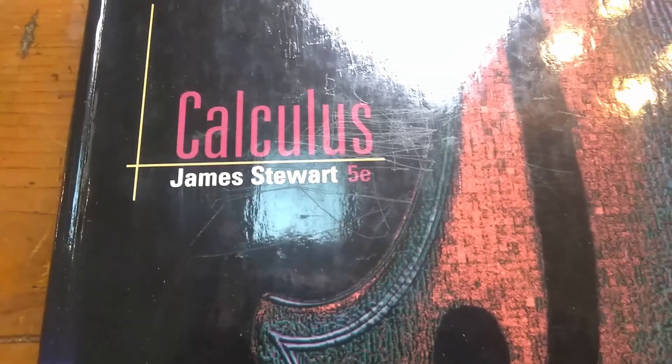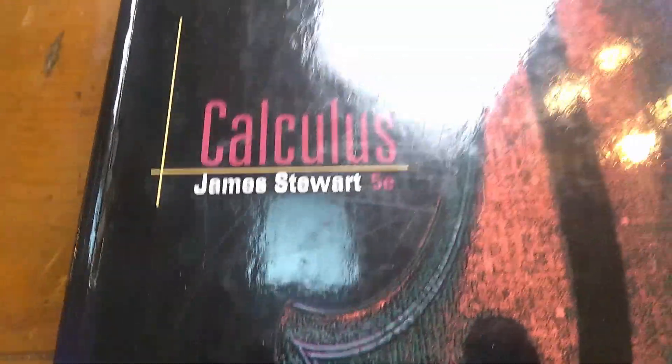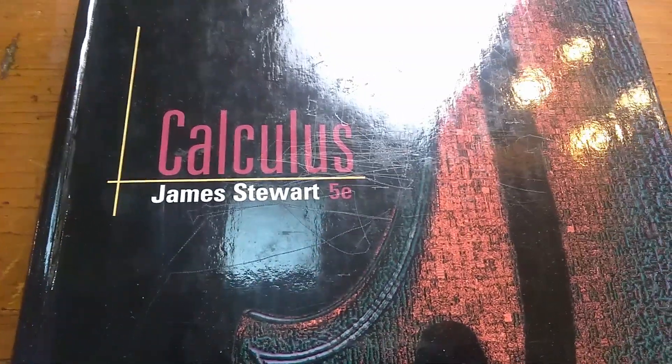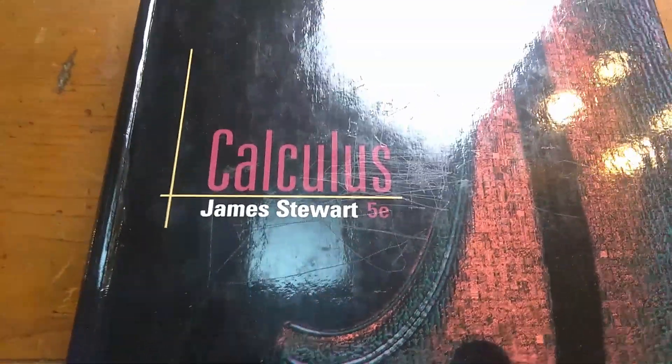Now, there's two versions of this book. There's the early transcendentals, and there's the regular one. This is the regular one. There's just some slight differences in the ordering of the topics, but no big deal.